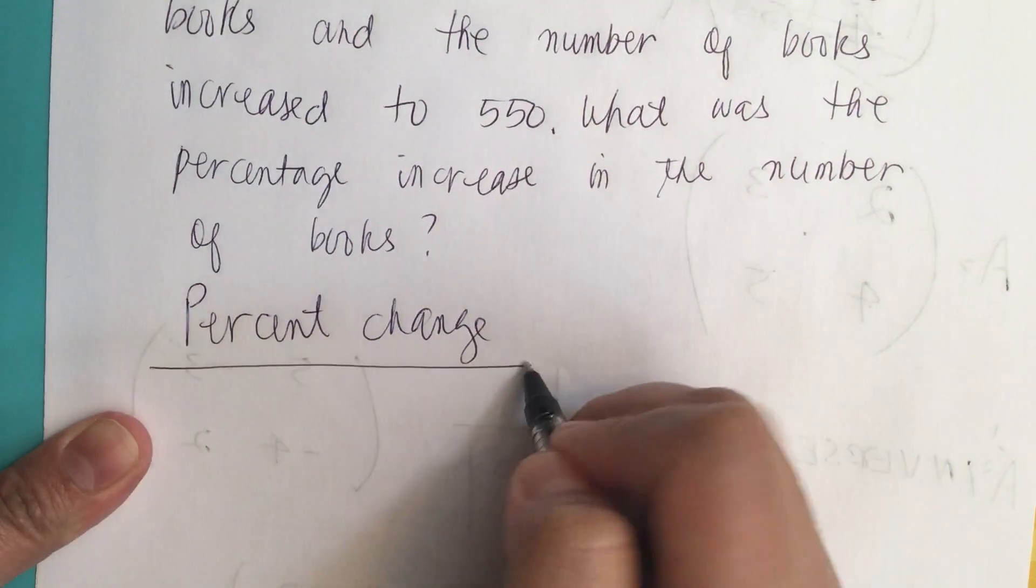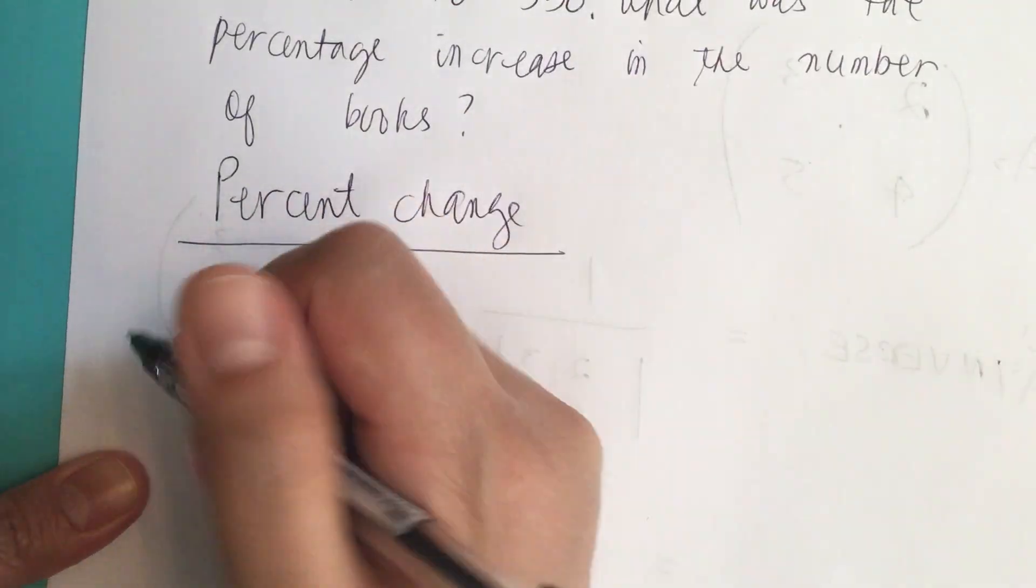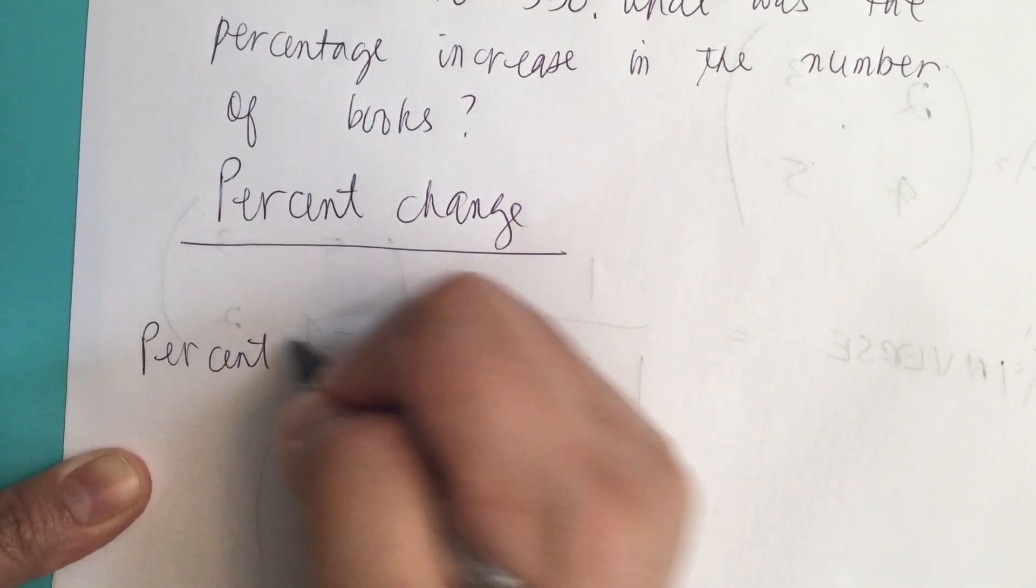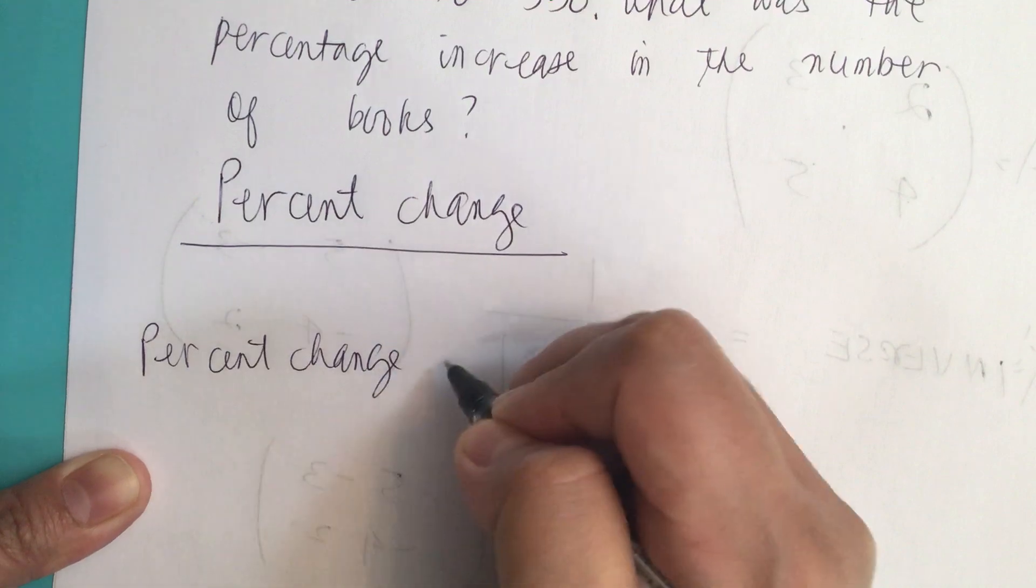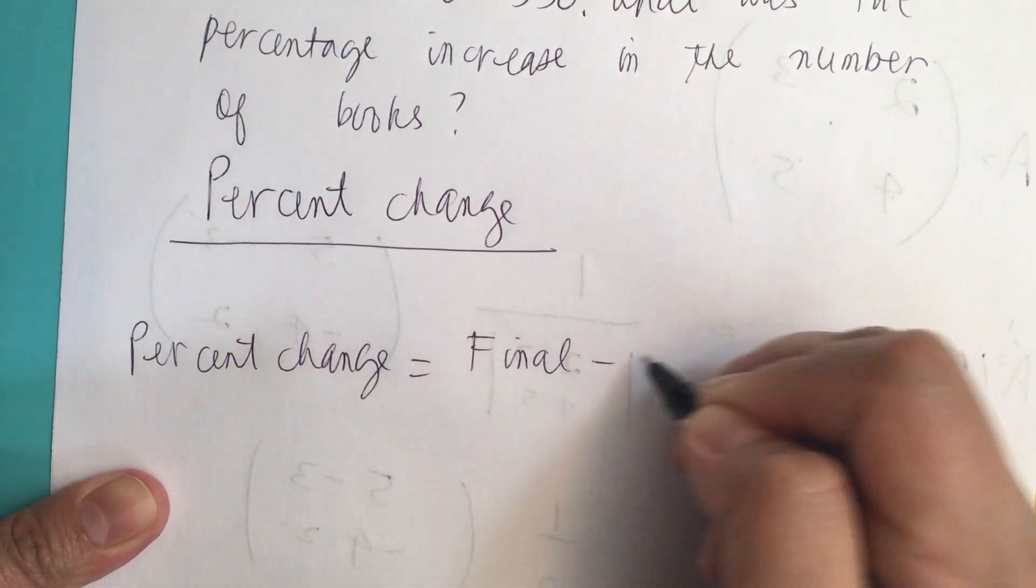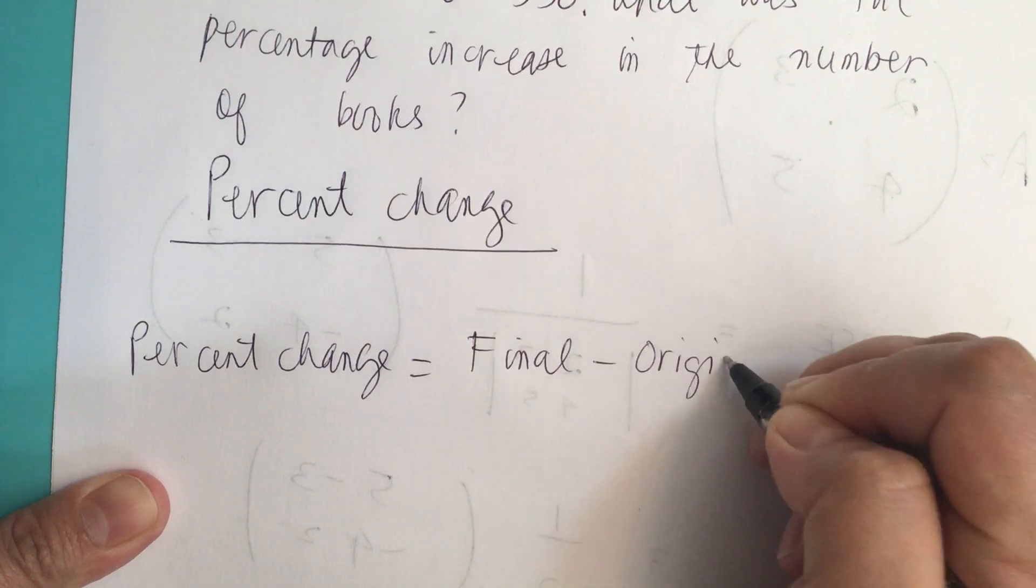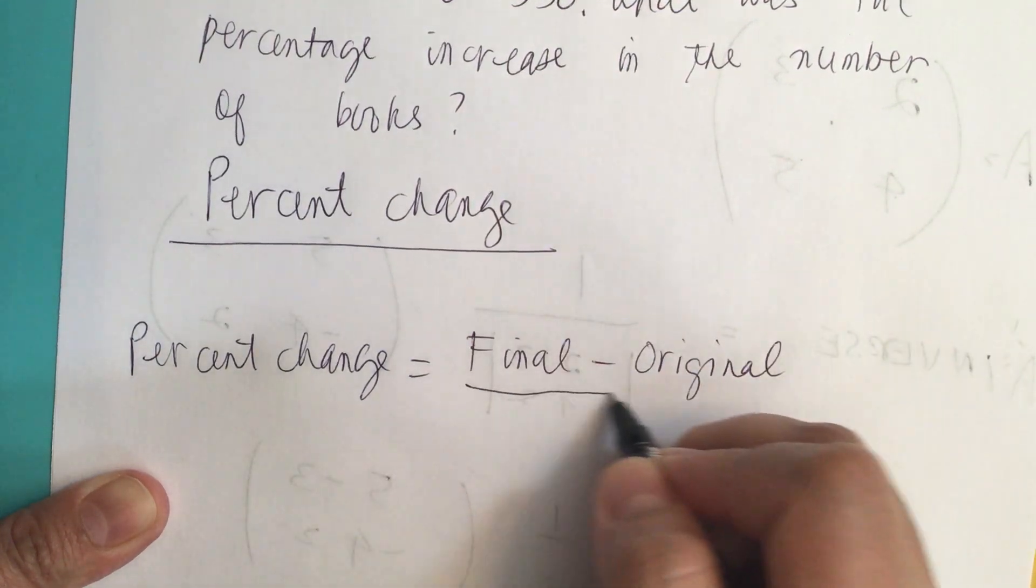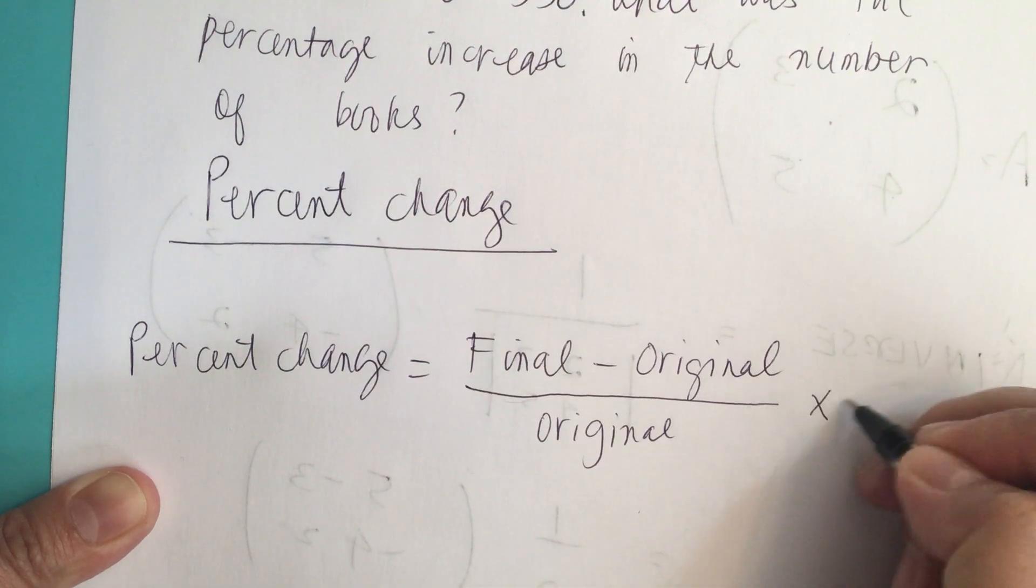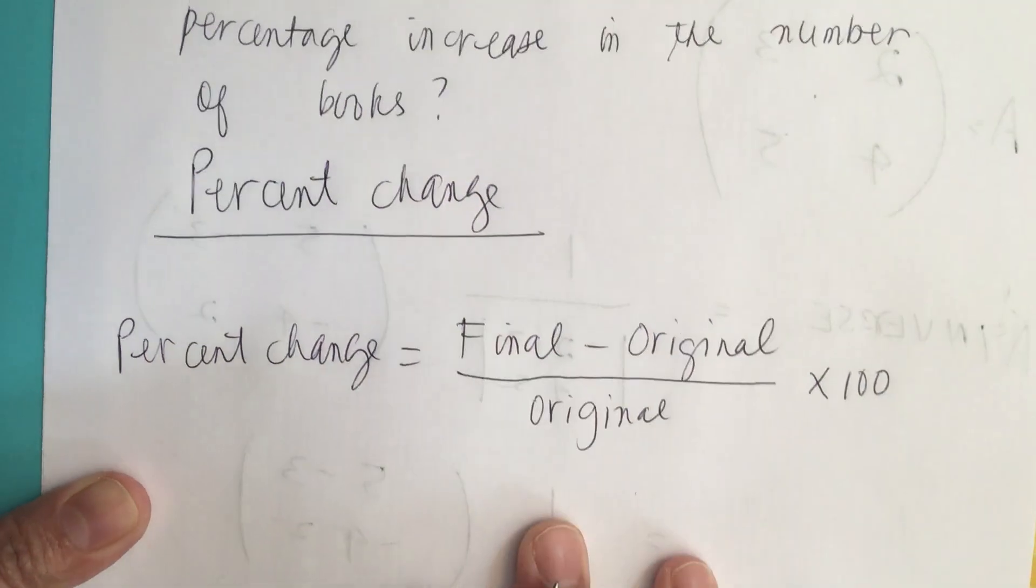So the formula for percent change is: percent change equals final minus the original, and this is all over the original, and then we multiply it by 100 to get the percent.